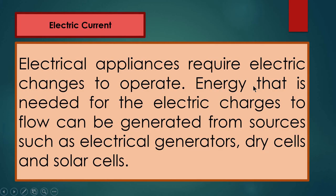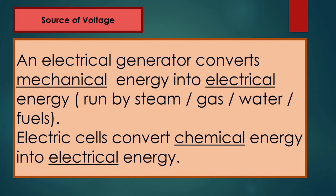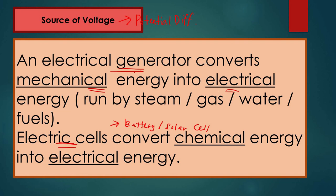What is electric current? Every electrical appliance requires electric charges to operate. The energy needed for electric charges to flow can be generated from sources such as electrical generators, dry cells, and solar cells. Voltage — also known as potential difference — can be generated from an electrical generator or electric cells such as a battery or solar cell. An electrical generator converts mechanical energy into electrical energy, requiring kinetic energy like movement — for example, hydropower and wind.